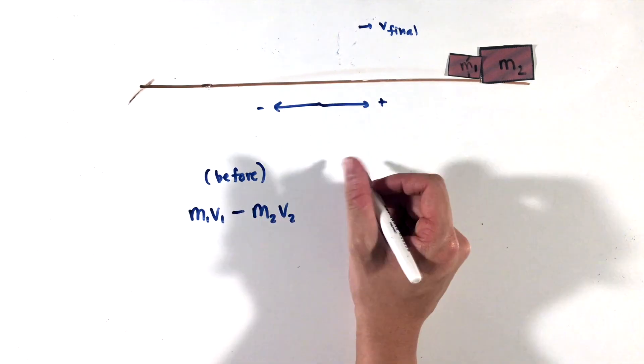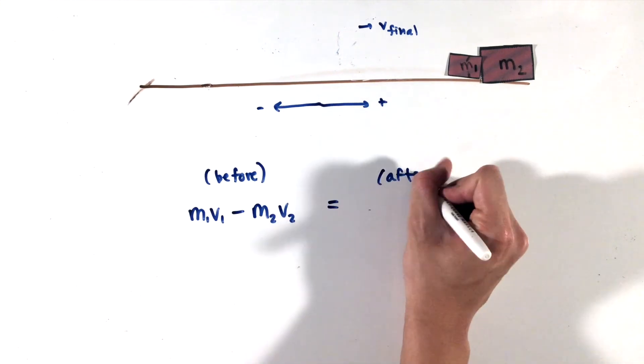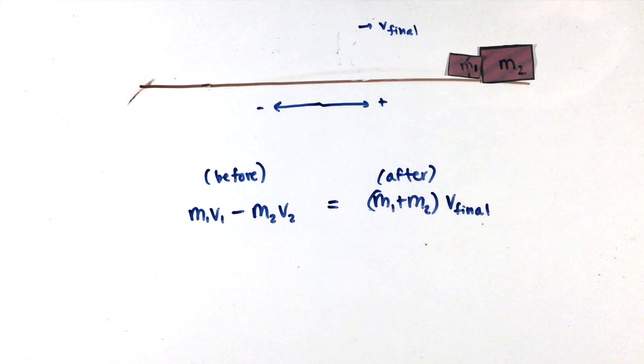After, because the two masses stick together, the final momentum will be some variable velocity v final times the sum of the masses m1 plus m2. This is the momentum equation that will apply to all inelastic collisions.